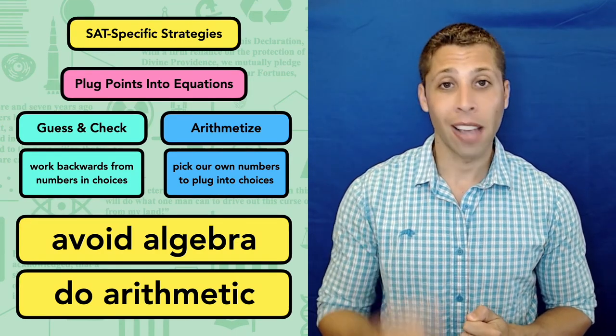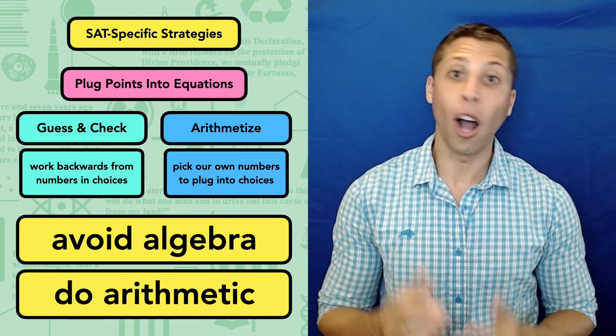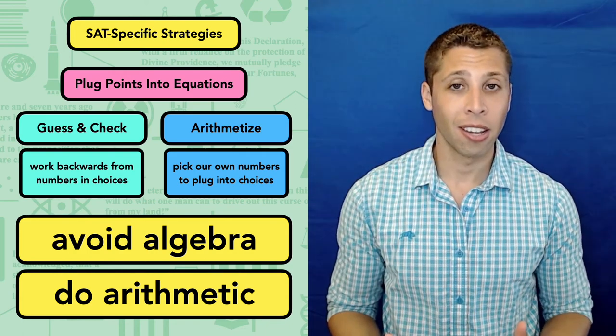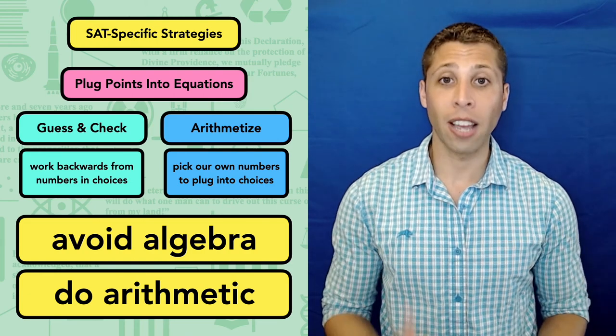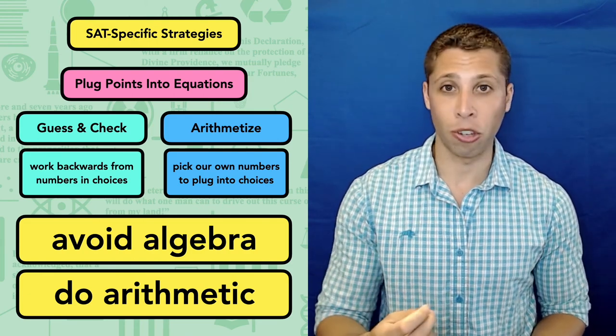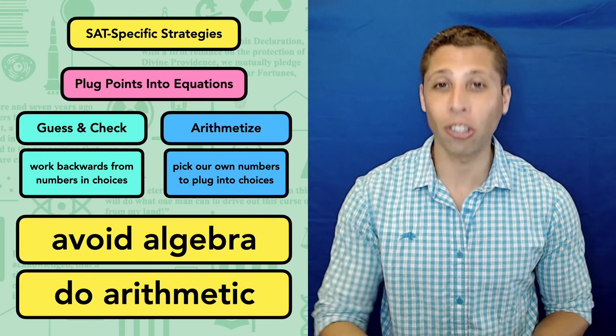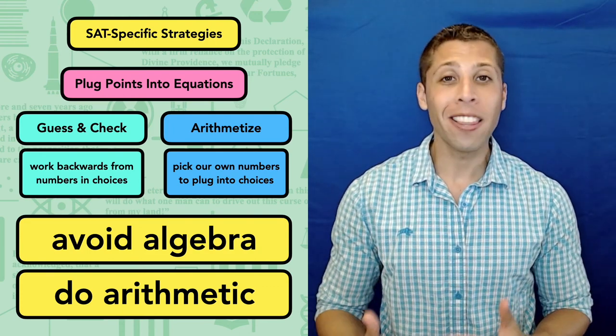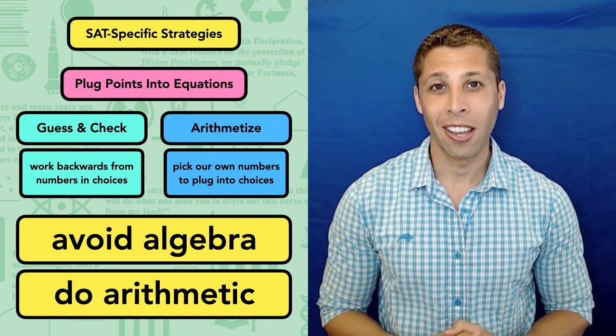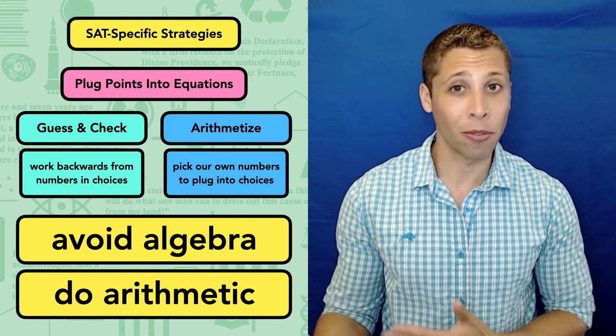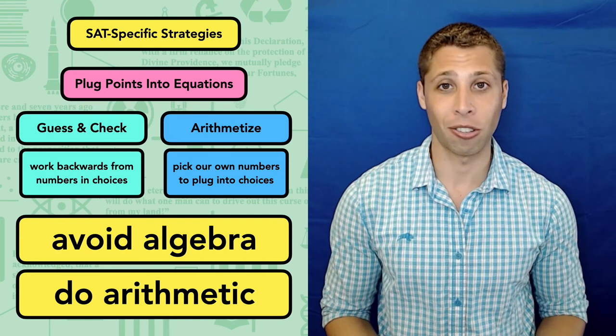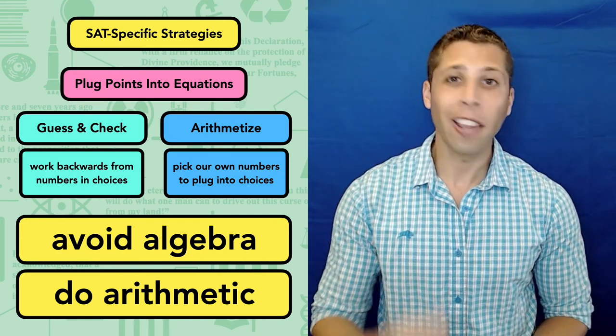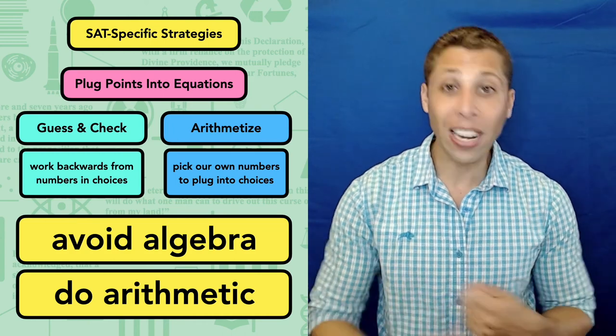Avoid algebra so that you can do arithmetic. Algebra is confusing. Algebra is prone to mistakes. Arithmetic is intuitive. Arithmetic is easier to organize. Whenever you look at a math question and feel that moment of confusion, of panic, of frustration, of exasperation, that's your brain telling you that maybe you should try one of these new strategies. It might not work. The strategies are not perfect. They don't guarantee right answers. But they are new tools that you need to practice using. And the more that you use them, the more effective they'll become. You'll learn what kinds of questions they work best on, what kinds of numbers to pick. And along the way, I think you'll find that you'll fall for fewer traps and, yes, earn more points.